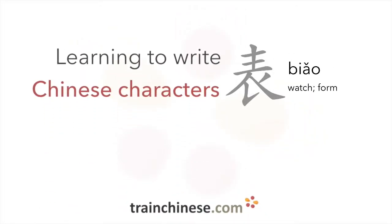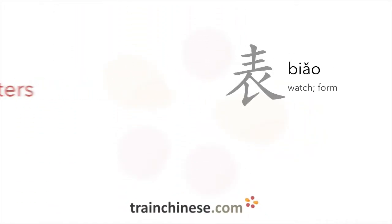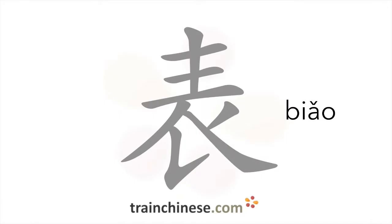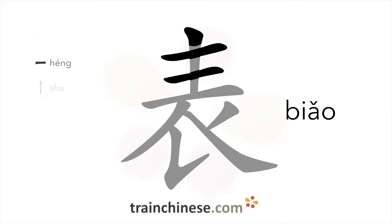Let's take a look at this character: 表. It's written with eight strokes. 横 — horizontal stroke.